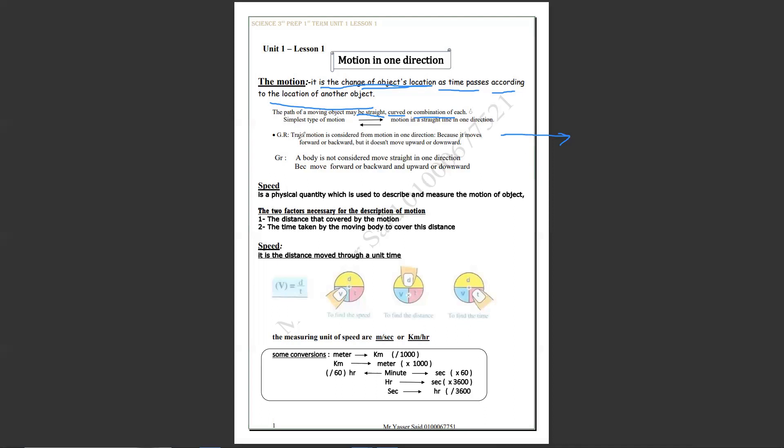So we give that what's happened and what's meant by simplest type of motion. Motion straight line in one direction. Or what happened? If you move in a straight line in one direction, this is the simplest type of motion. Whatever your question. If you see simplest type of motion, so your answer will be motion straight line in one direction. Your answer will be simplest type of motion. It's so easy.